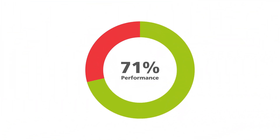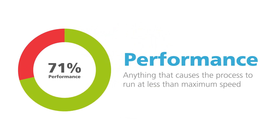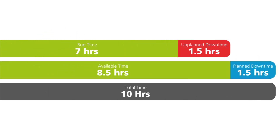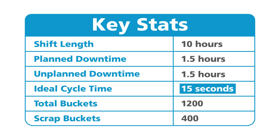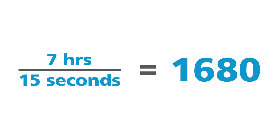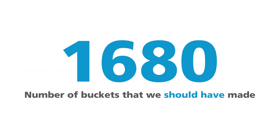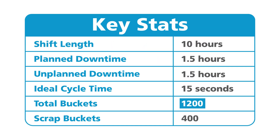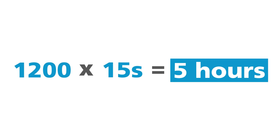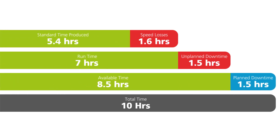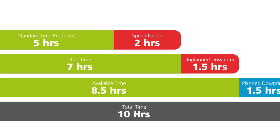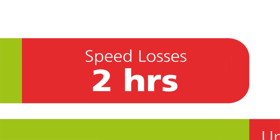Our second factor is performance. Performance takes into account anything that causes the manufacturing process to run at less than the maximum speed possible. We know that our machine was running for 7 hours, so based on our cycle time of 15 seconds, we should have been able to make just under 1,700 buckets. However, we only created 1,200, which should have taken us 5 hours. This is known as our standard time produced. Once we've subtracted this from our machine's runtime, we're left with 2 hours of time that we lost to speed losses.